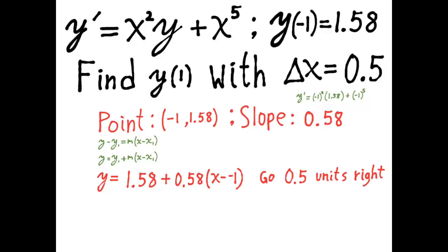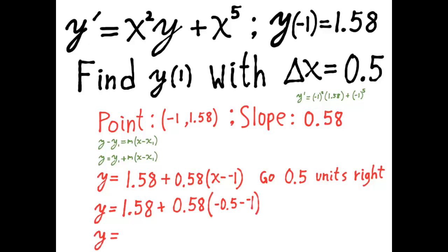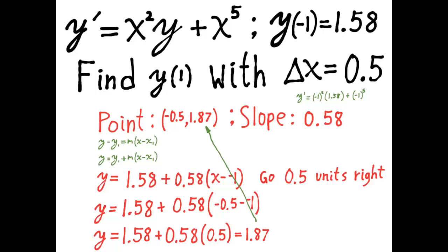I need to use that linearization function to estimate the value of the curve 0.5 units to the right of negative 1 — that is, I've got to step over to negative 0.5. So I plug in negative 0.5 for x. Then I do the subtraction and compute 1.58 plus 0.58 times 0.5, which comes out to be 1.87. So 1.87 is my y-coordinate after I've moved over on the linearization function 0.5 units, and that value now gets used as the y-coordinate of the next point.